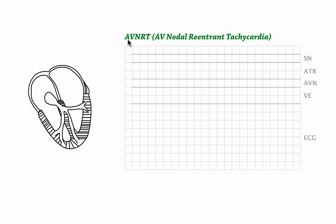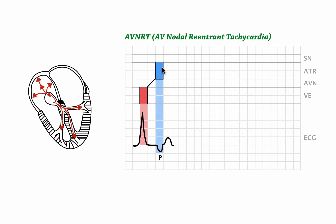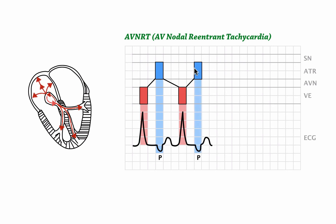Let's see what AVNRT looks like on the ladder diagram. First, depolarization goes down into the ventricles and we can see a QRS complex. Then the impulse travels back up into the atria, where it causes a retrograde P wave — negative in leads 1 and 2. Then the impulse travels back down into the ventricles, causing depolarization and another QRS complex, then travels back up causing another retrograde P wave, and so forth. Please note that the negative P wave in AVNRT comes immediately after the QRS complex, which will be important when differentiating between AVRT and AVNRT.